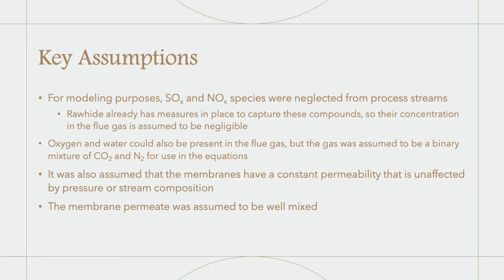When approaching modeling and calculations, some assumptions must be made. Upon looking at the annual emissions for the Rawhide power plant, the NOx and SOx concentrations were low enough to be considered negligible. We also decided to ignore any oxygen or water that could be present in the flue gas, meaning that we treated the flue gas, as mentioned earlier, as a binary mixture of only CO2 and N2. Many studies, in addition to our own, also assumed binary mixture for flue gas membrane separations.